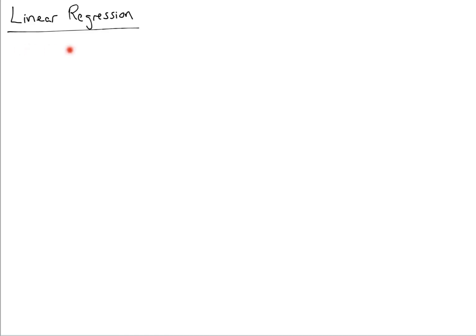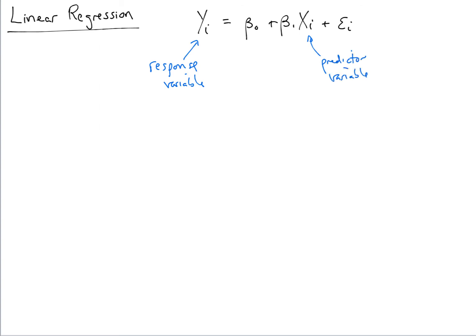In this lecture we'll be introducing the topic of linear regression. The basic idea is we work with an equation y_i equals beta_0 plus beta_1 * x_i plus epsilon_i, where y_i is called the response variable and x_i is called the predictor variable.